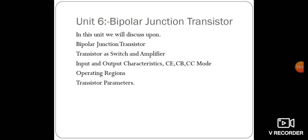In Unit 6 we will understand bipolar junction transistors (BJT). A transistor has three terminals: collector, emitter, and base. We will study the transistor as a switch and as an amplifier, along with input and output characteristics. We will cover the common emitter, common base, and common collector modes, the operating regions of a BJT, and transistor parameters.